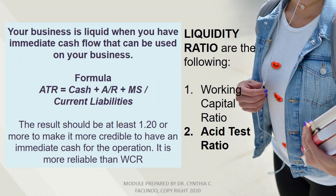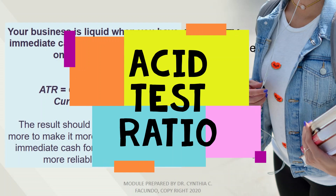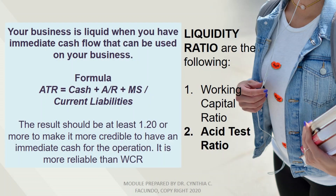The next type of liquidity ratio is the acid test ratio. Your business is liquid when you have immediate cash flow that can be used in your business. The formula is: acid test ratio equals cash plus accounts receivable plus marketable securities, divided by current liabilities. The result should be at least 1.2 or more for credible immediate cash flow for operations. It is more reliable than the working capital ratio.